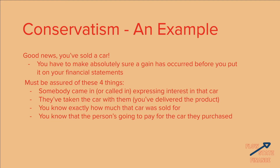Three: you know exactly how much the car was sold for — since you often negotiate on price, you need to know absolutely for sure. Four: you know that the person is going to pay for the car they purchased. You need to be sure of all four: somebody expressed interest, you've delivered the product, you know the price it was sold for, and you know the person will deliver on the money they promised — those are the four things before you can count it as a gain.